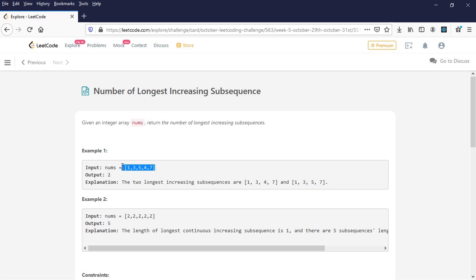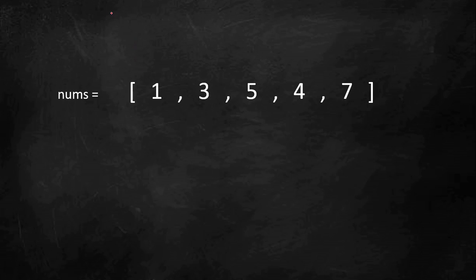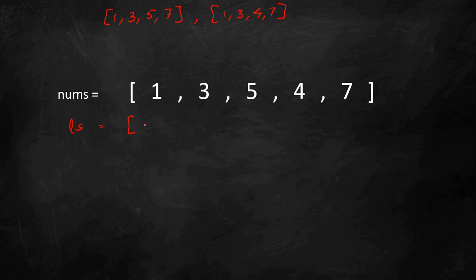Let's look into example 1 and see how we can build the logic. The longest subsequences were 1, 3, 5, 7 and 1, 3, 4, 7. One way to find the longest subsequence is by using dynamic programming, because at each point we can check what is the longest subsequence up to that point. We create an array ls, initialized with 1 for all elements, since each number itself can be a subsequence of length 1.